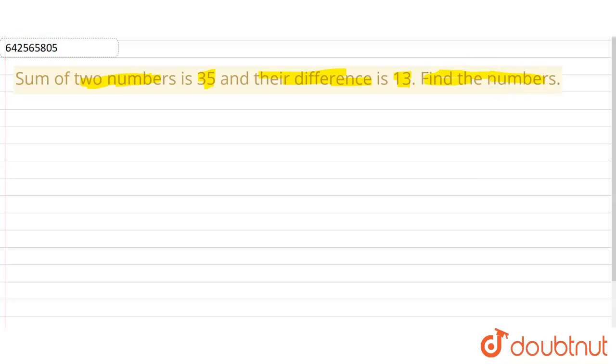So let us assume the first number is A and the second number is B. According to the question, we will write the first condition: A plus B, that is their sum, is equals to 35.